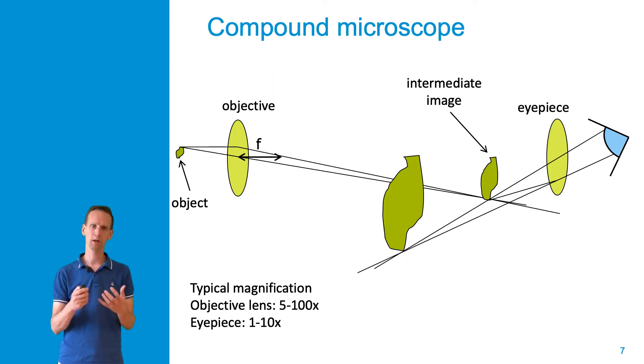The basic imaging principle in a modern day microscope is slightly different from that of a single lens system. So let's look at a simple two-lens compound microscope system, which you see depicted here.